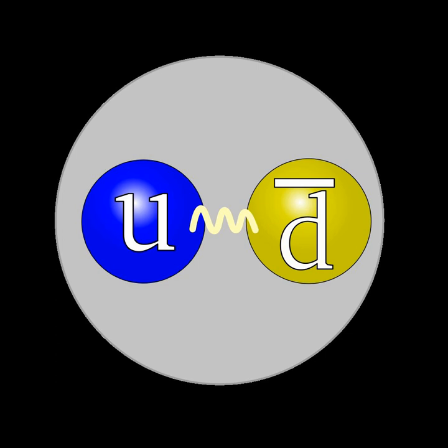π is any of three subatomic particles: π0, π+, and π−. Each pion consists of a quark and an antiquark and is therefore a meson.